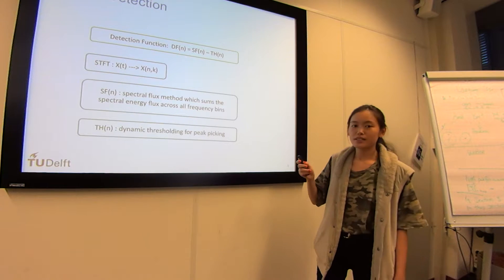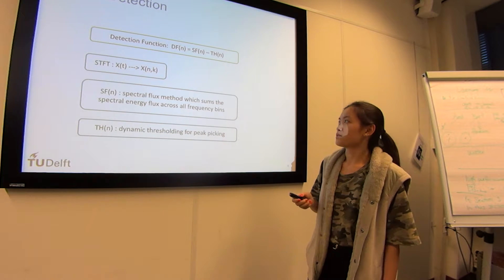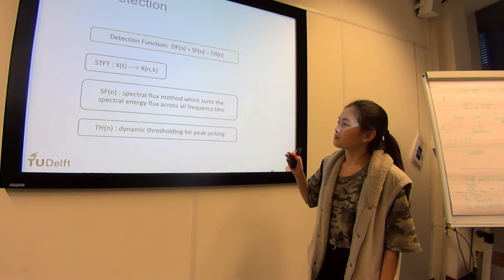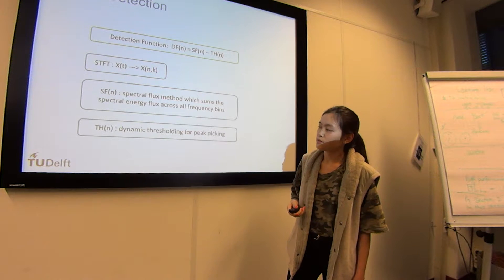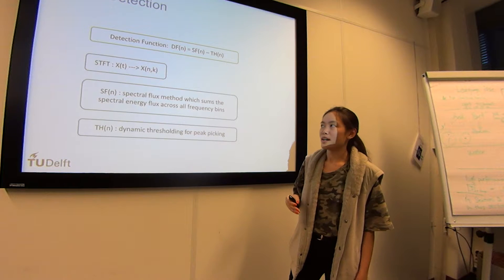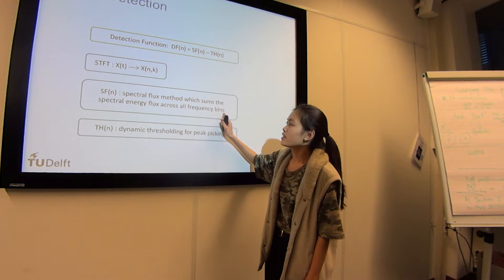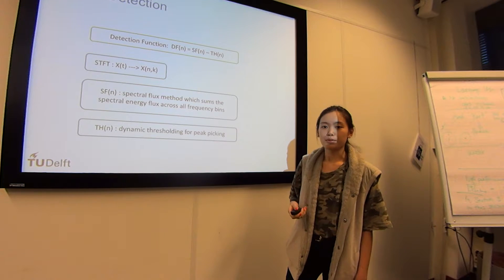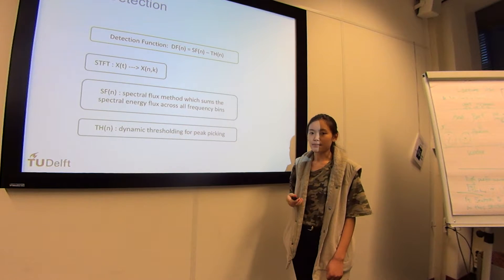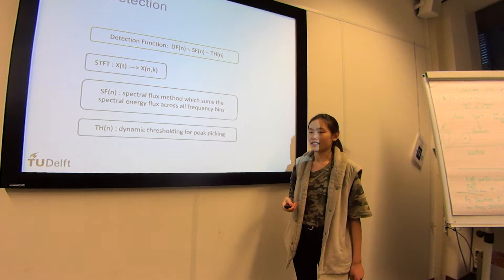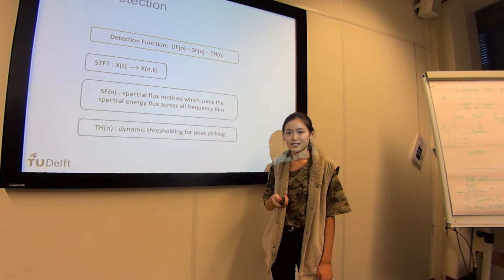We introduce the techniques inside this process. We have a detection function which equals the spectral flux method minus a threshold. First, we use Short-Time Fourier Transform (STFT) to map the time sequence into the frequency domain. Next, we use the spectral flux method to grab the total energy across all frequency bins. Then we define a dynamic threshold for picking up the peaks, which stand for the onsets. If the detection function has a result larger than zero, we get the onset position.